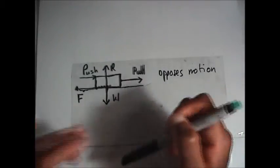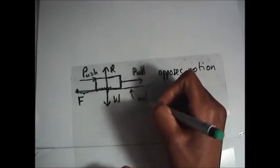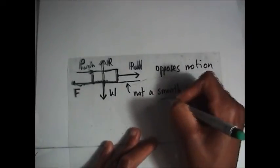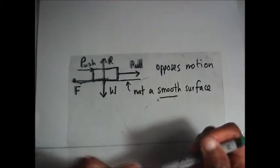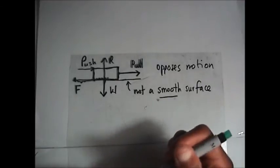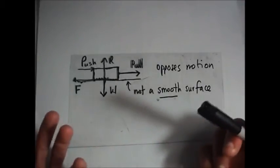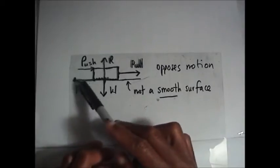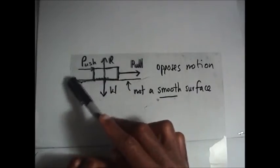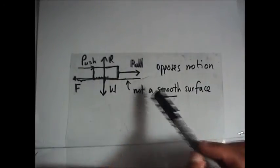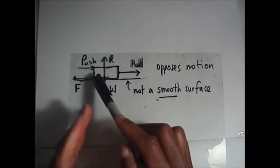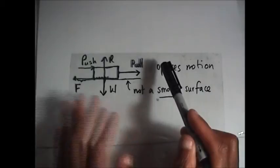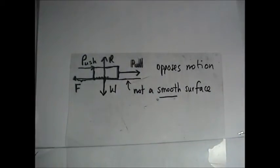Friction is not always present. When the surface is smooth, there will be no friction. In reality it's difficult to achieve a perfectly smooth surface, but exam questions may give you hypothetical situations where the surface is smooth and friction disappears. When it's not a smooth surface, friction opposes motion in the opposite direction.